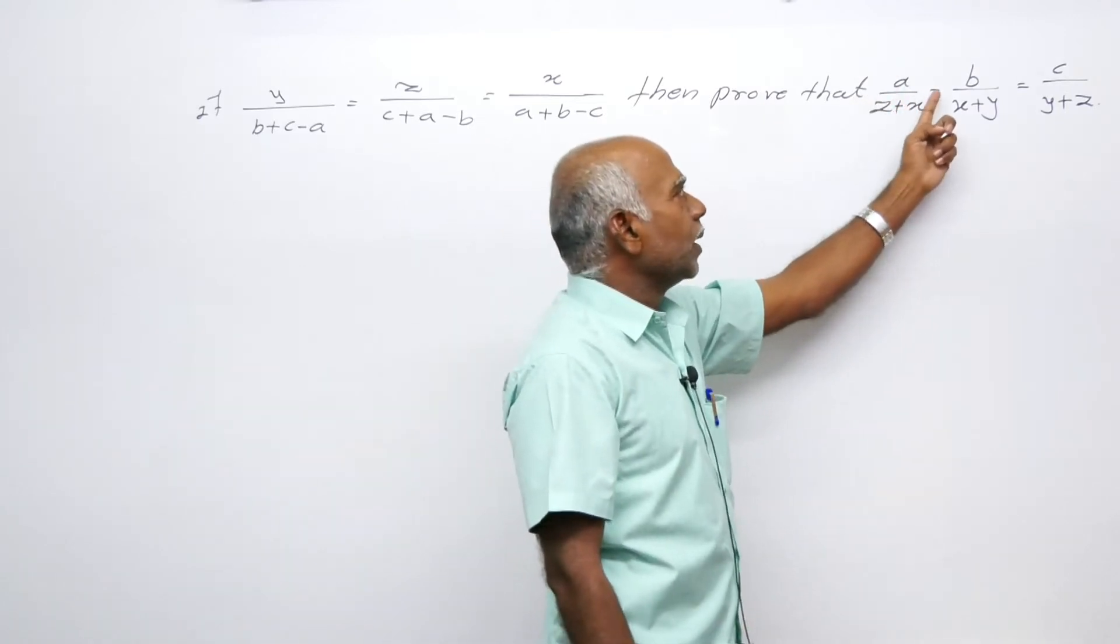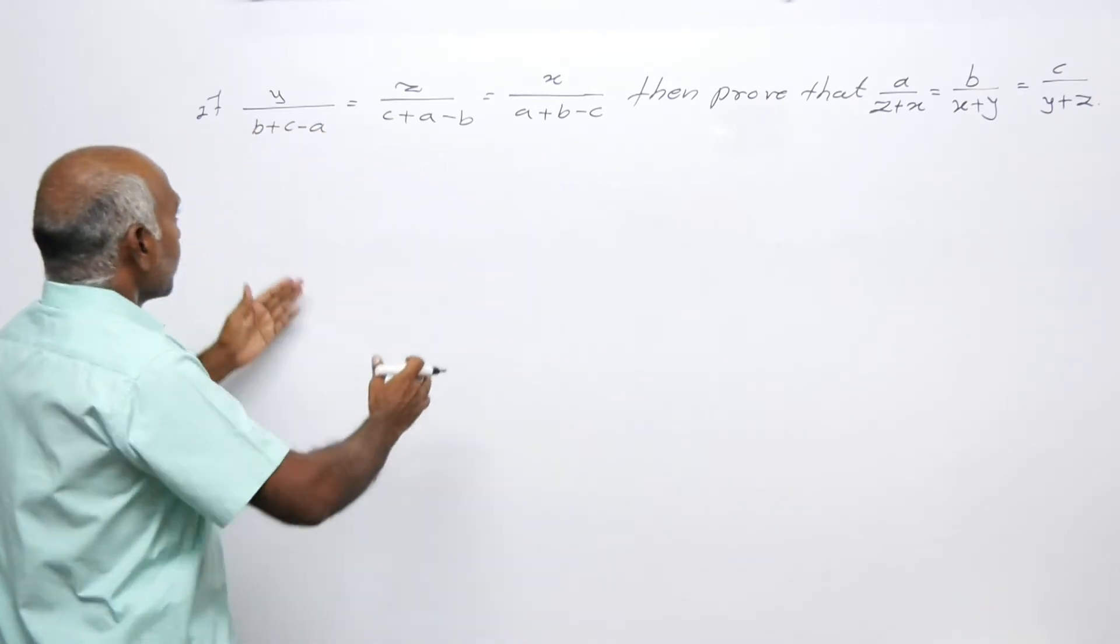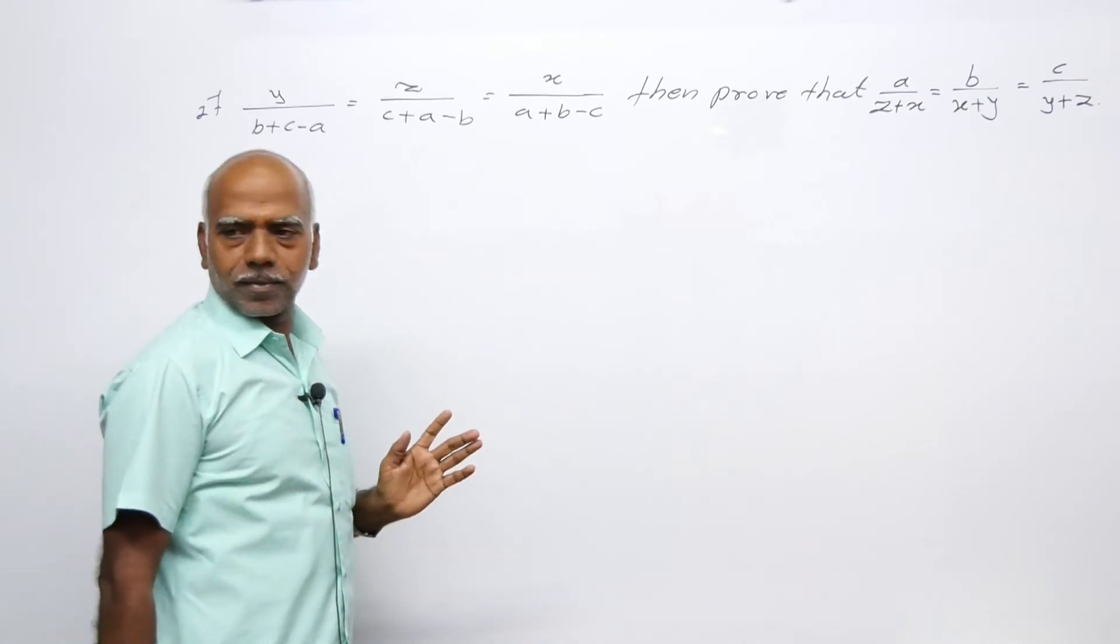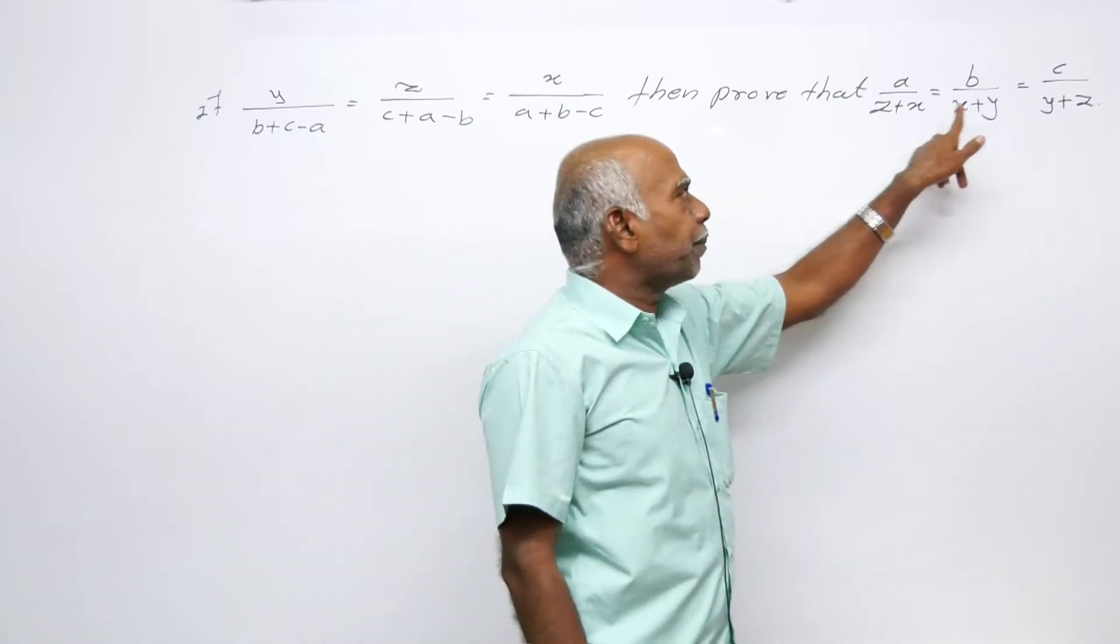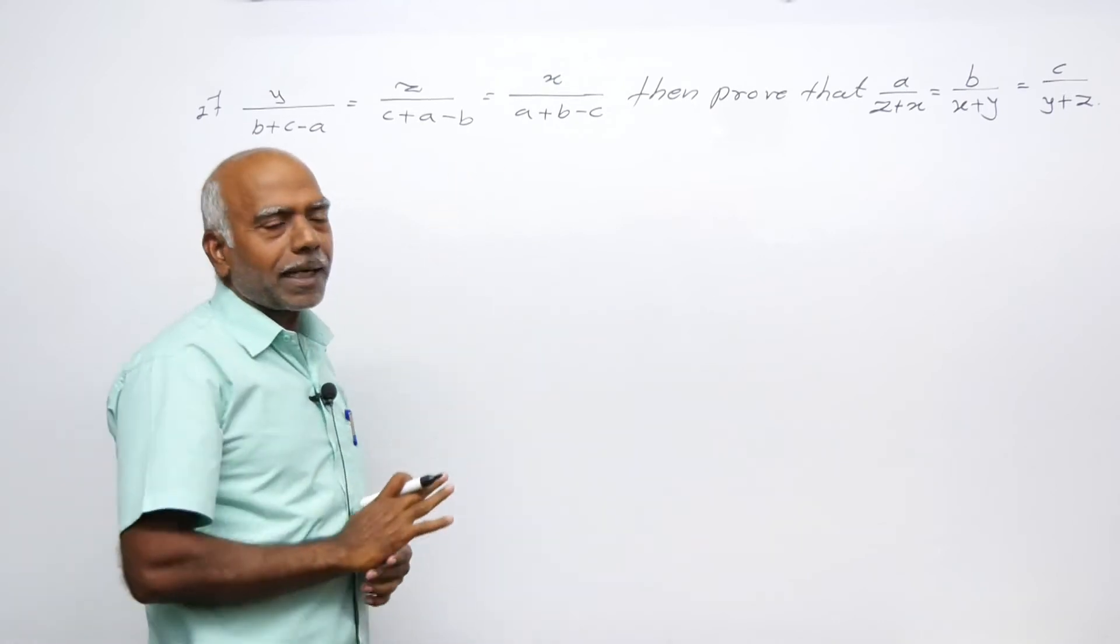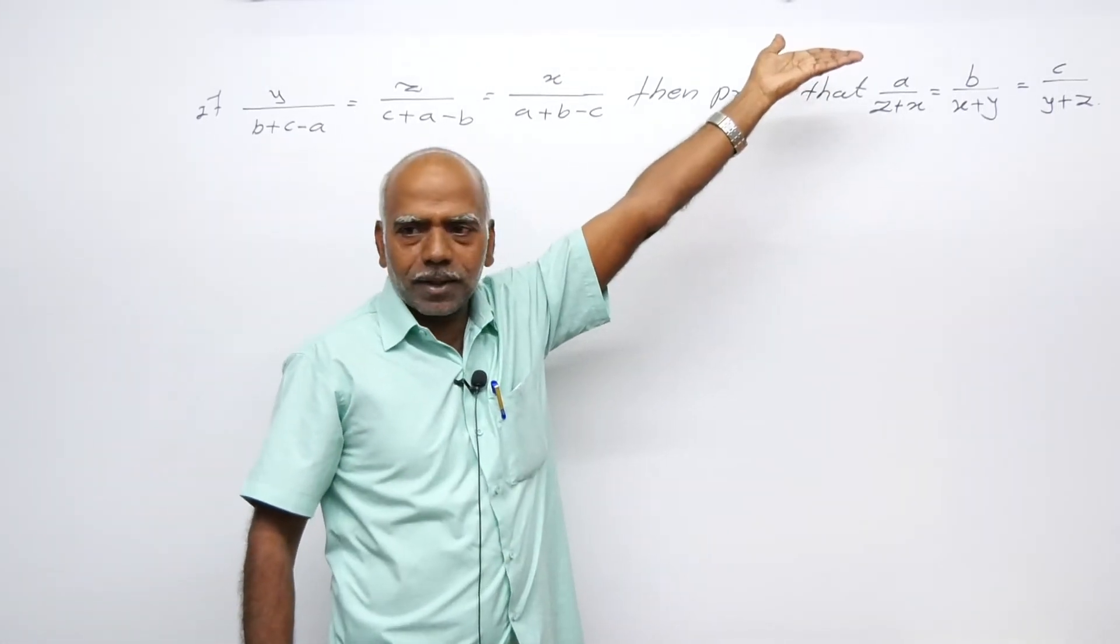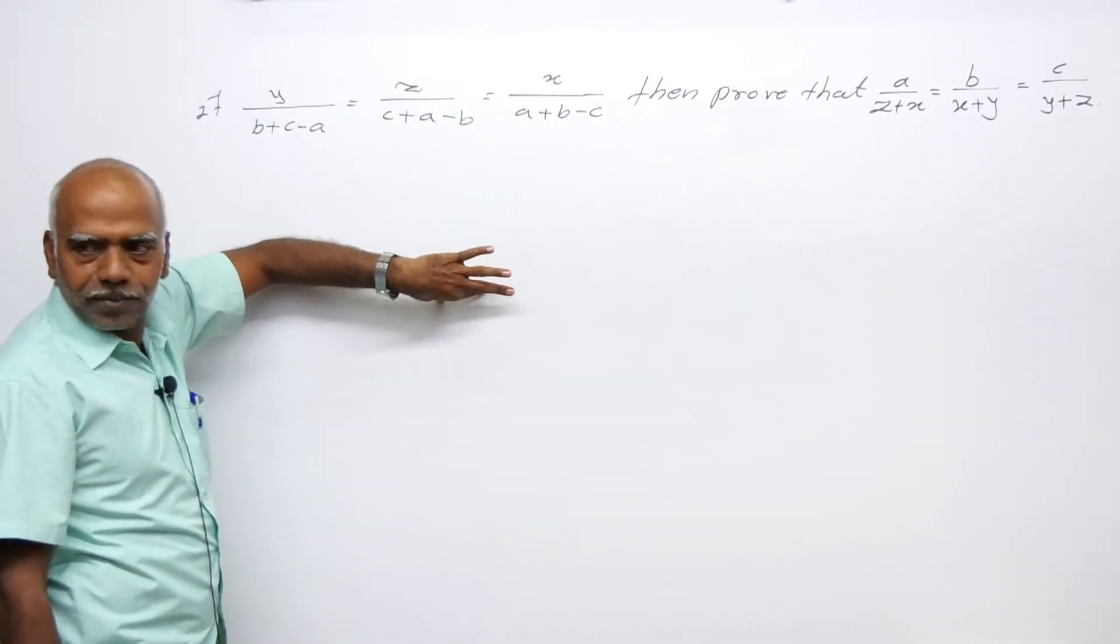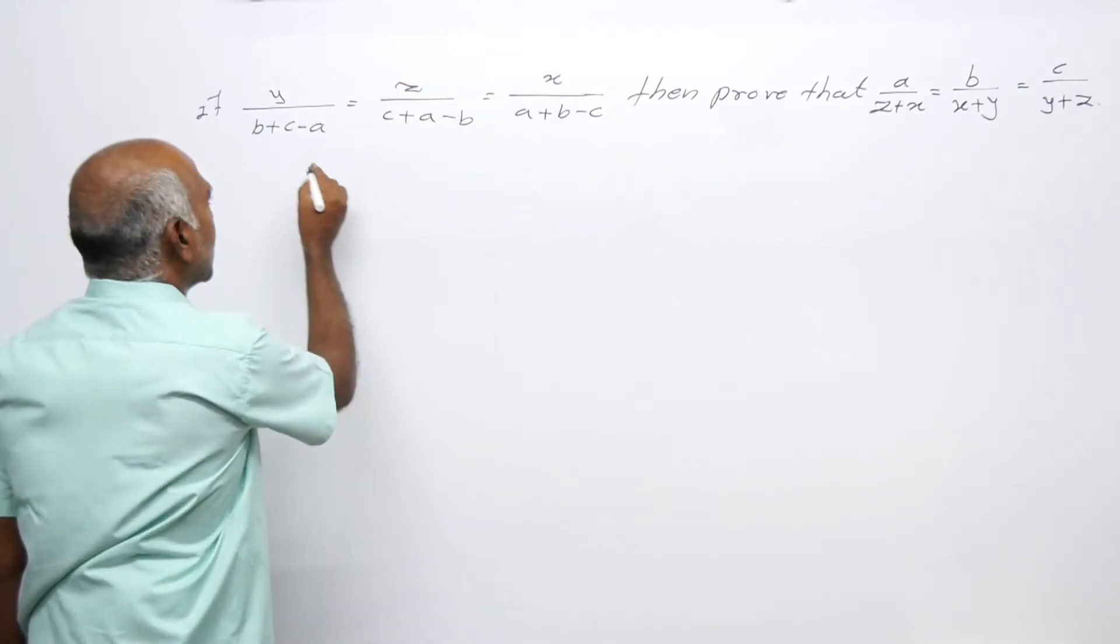From this, we need to arrive at that conclusion. What type of calculation should we do? If we look at this part, ABC is in the numerator and xyz is in the denominator. We need to get that on top. Solution: